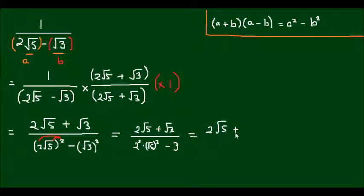So I end up with 2√5 plus √3 divided by 4 times 5 minus 3, and 4 times 5 is 20 minus 3 is 17.